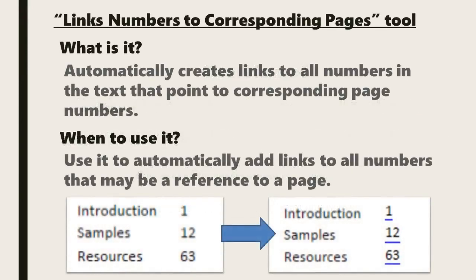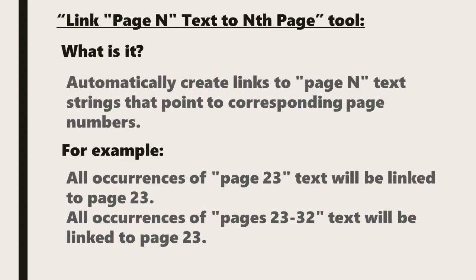Beginning with the Link Numbers to Corresponding Pages tool, this feature automatically creates links to all numbers in the text that direct the user to corresponding page numbers. It would be used to automatically add links to all numbers that may refer to a page of a document. The Link Page-N Text to Nth Page tool automatically adds links to page-N text strings that direct the user to corresponding page numbers. For example, all occurrences of the text 'page 23' will be linked to page 23 itself. All occurrences of 'pages 23 to 32' would be linked to page 23, as it marks the beginning of this page range.